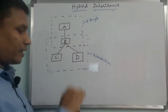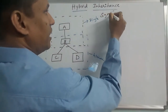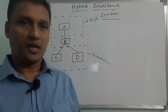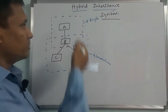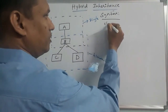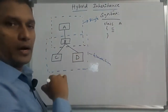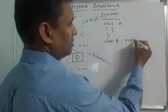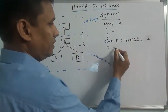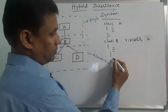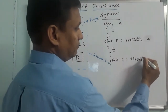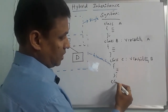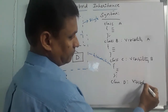We have a particular syntax. For example, class A, next class B with visibility A, next class C with visibility B, next class D with visibility B. This is the design.